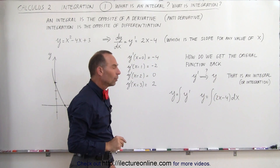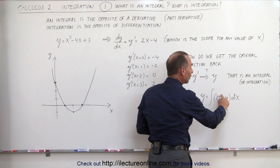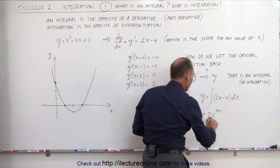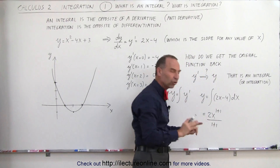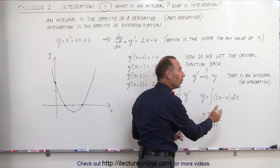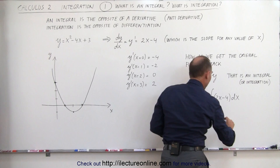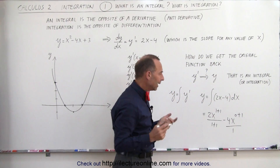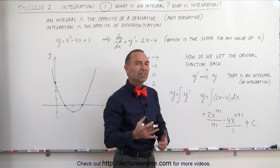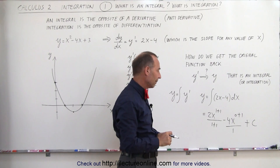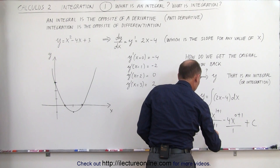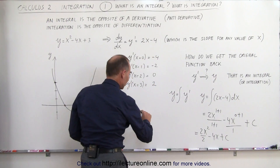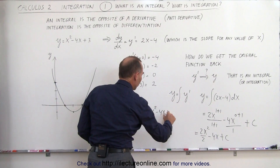Now, how do we take the integral of that? We do differentiation in reverse. We add 1 to the exponent, so this is equal to 2x to the 1 plus 1, and we divide by the new exponent — 1 plus 1 equals 2. So we add 1 more to the exponent and divide by the new exponent. For the minus 4 term, which was 4x to the 0 power, we add 1 to the exponent and divide by the new exponent, which is 1. Then we add what we call a constant of integration — we just call it C — and we'll see in a moment what that means. Simplifying: this equals 2x squared divided by 2 minus 4x to the first power plus some constant, or y equals x squared minus 4x plus some constant. That is the integral — we got the original function back.